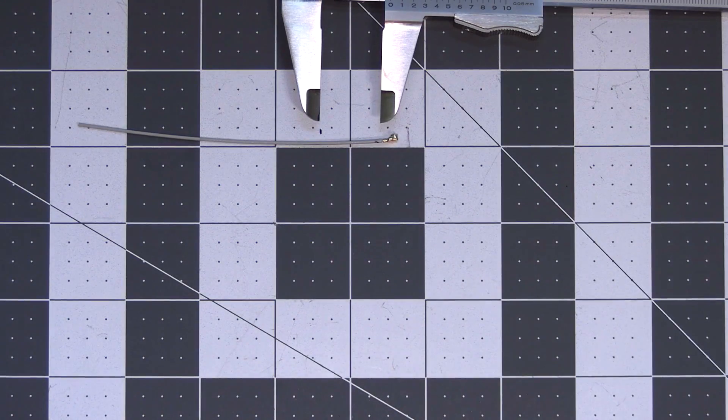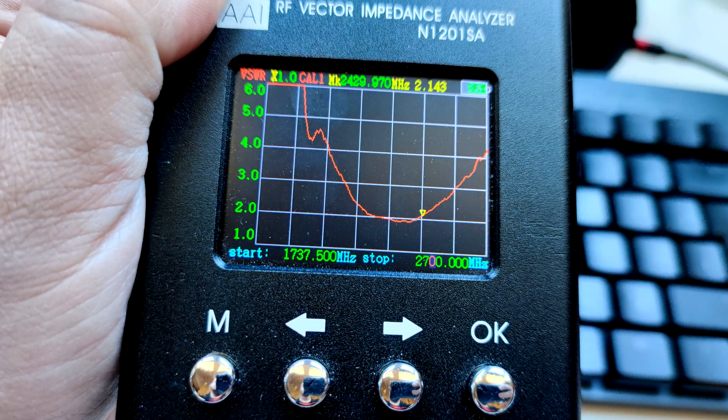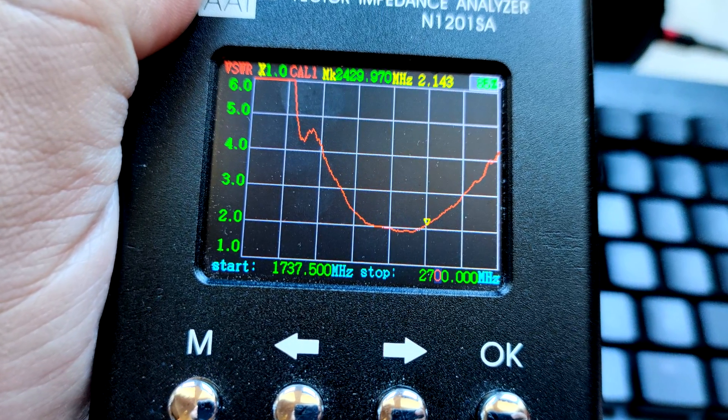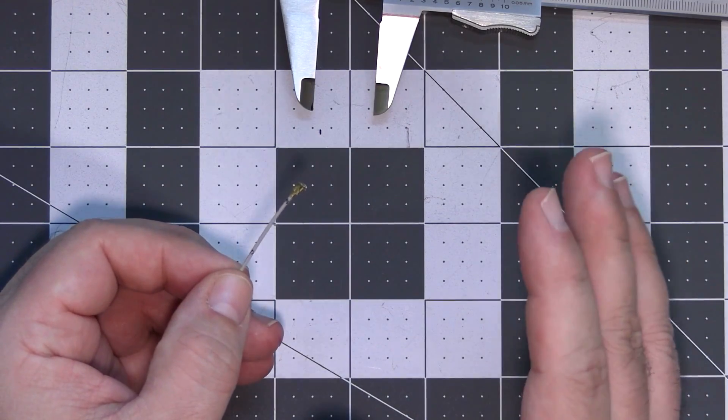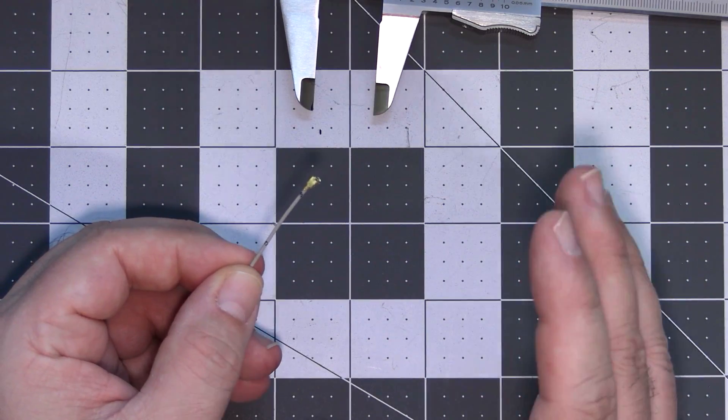Our antenna will have active element of around 20 millimeters and as I checked with my VNA, this is the correct length for this kind of the coax cable. Bear in mind, if you will use a different coax cable, the length of the antenna might be slightly off.